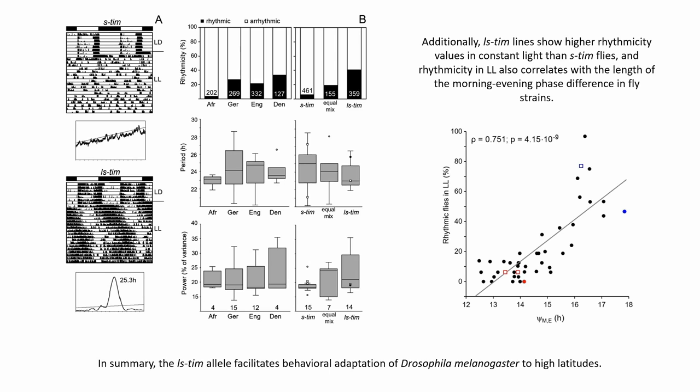In summary, the l-s-tim allele facilitates behavioral adaptation of Drosophila melanogaster to high latitudes.